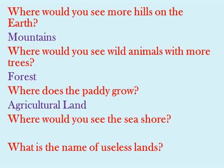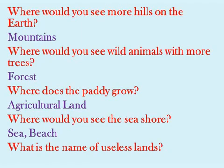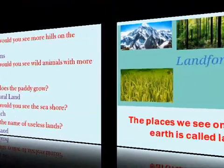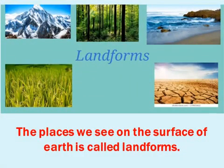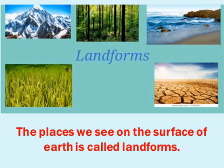Where would you see the seashore? It is near the sea or the beach — correct. What is the name of useless lands? It is fallow land. The places we see on the surface of the earth are called landforms — the things on the top surface of the earth are called landforms.